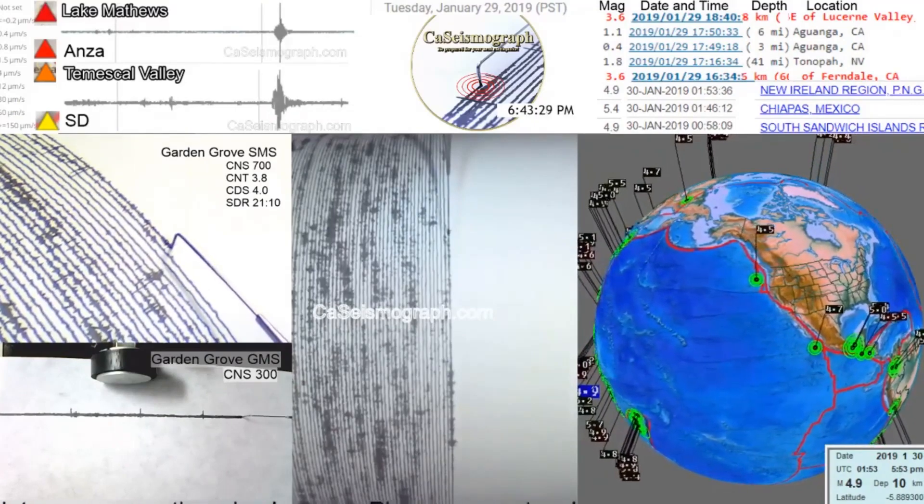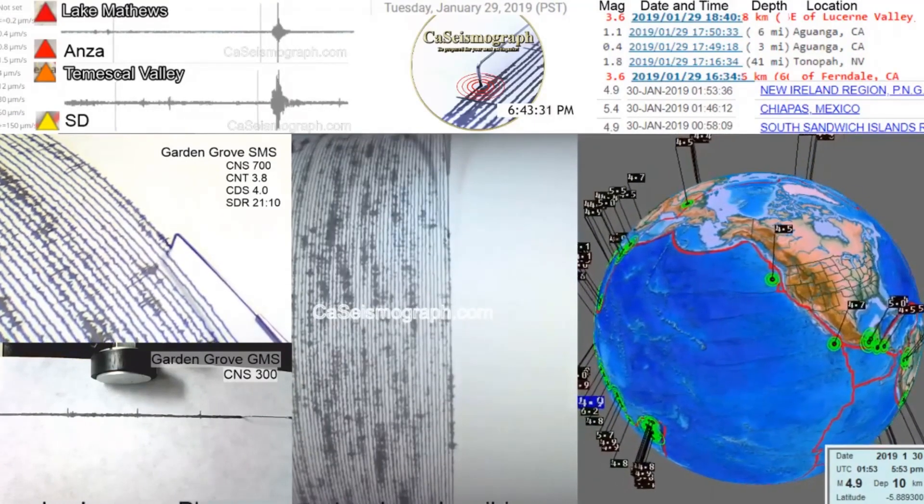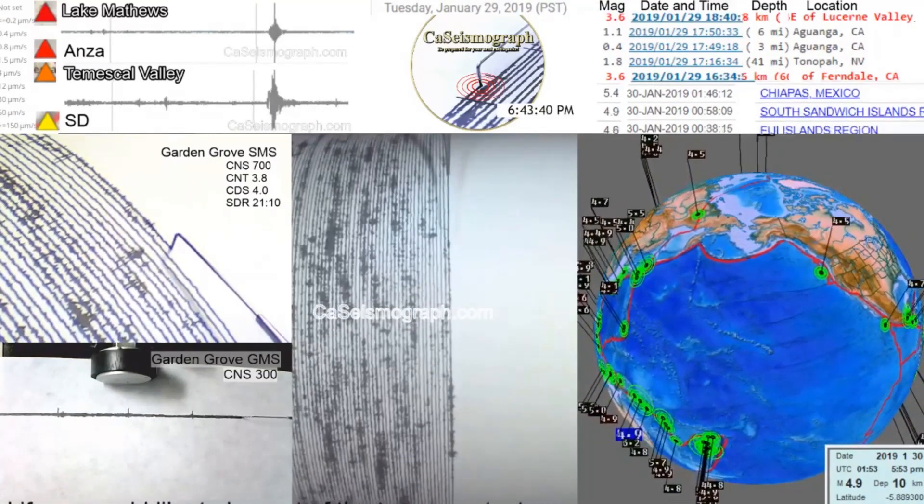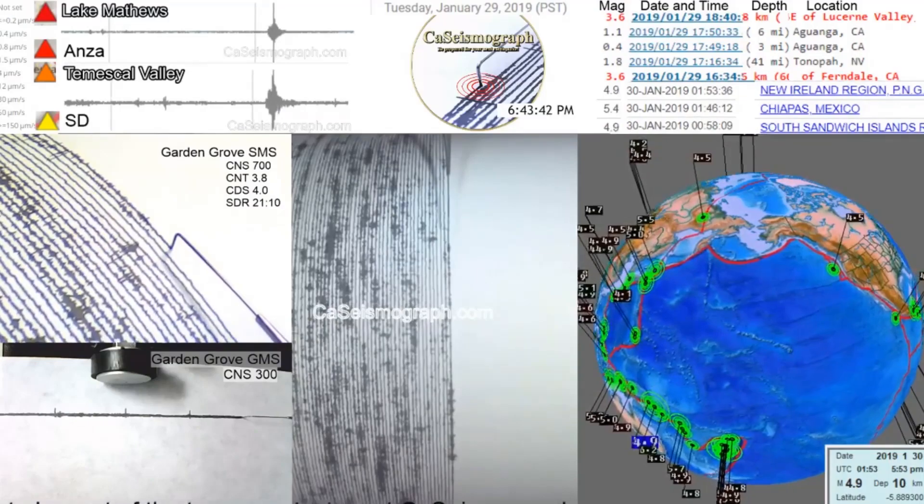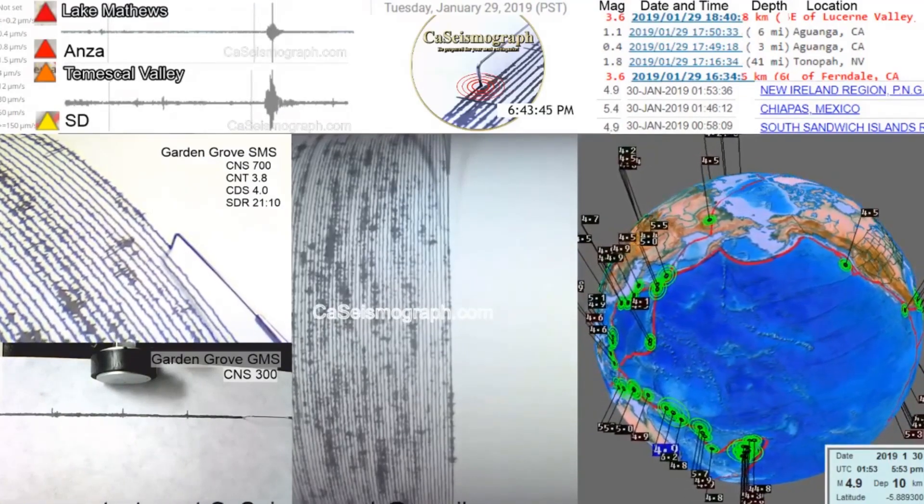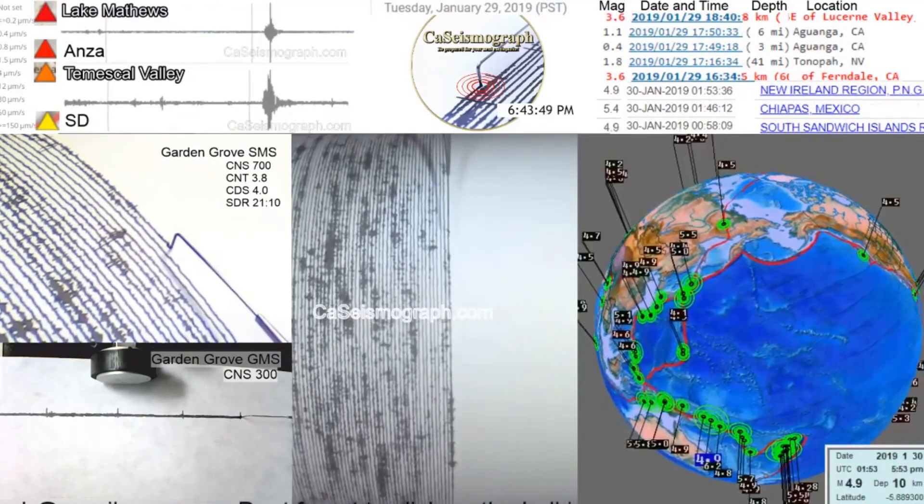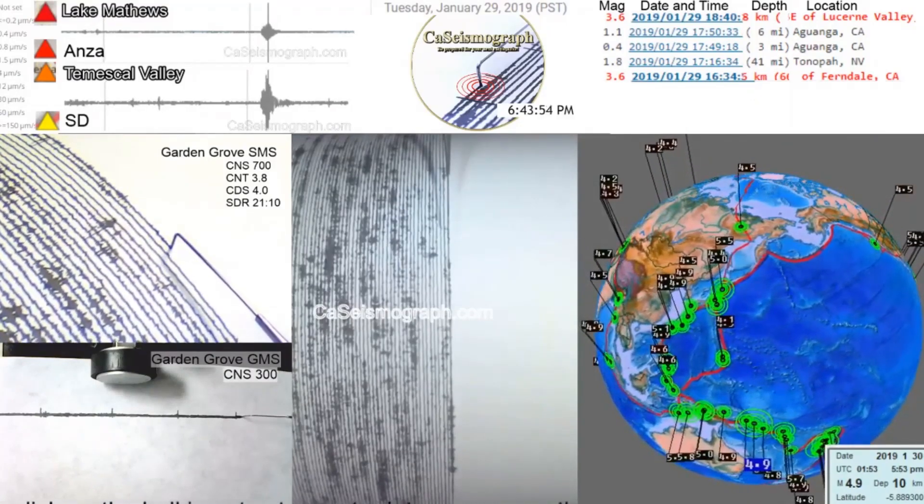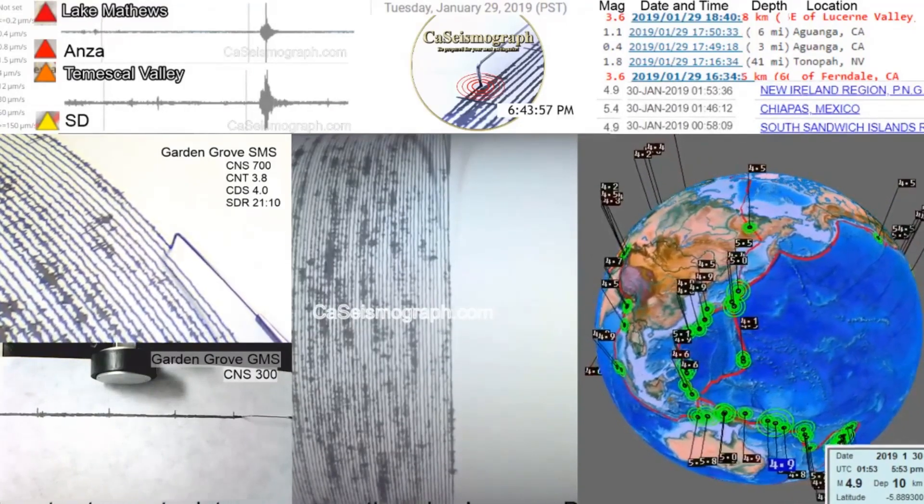And that's where you see the difference in the amount of translated pan movement on the Lake Matthews to Mescal Valley versus our Garden Grove sensor. So with that said, here it is on the right top, it showed up as a 3.6 in Luzerne Valley at exactly 6:40 PM.